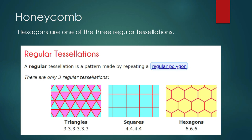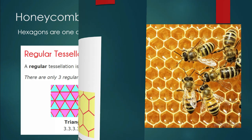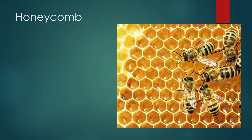There are three regular polygons that can produce a tessellation: triangles, squares, and hexagons. Honeycombs are constructed using regular hexagons.